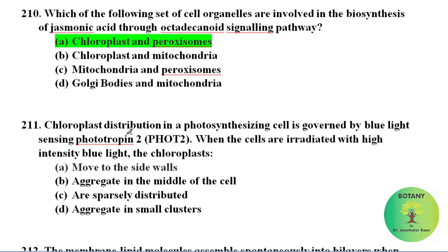Chloroplast distribution in a photosynthesizing cell is governed by blue light sensing phototropin-2. When the cells are irradiated with high intensity blue light, the chloroplasts move to the side walls.